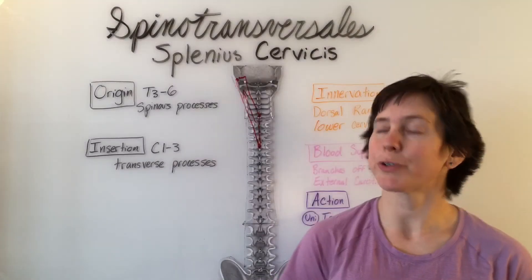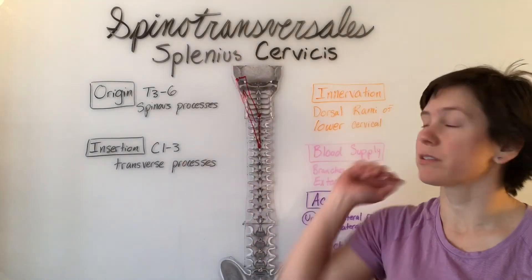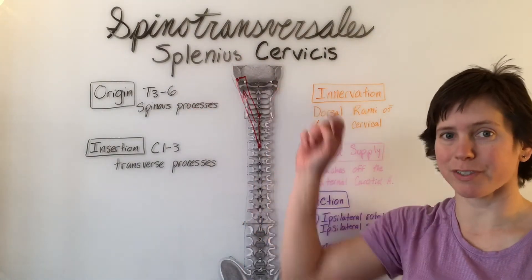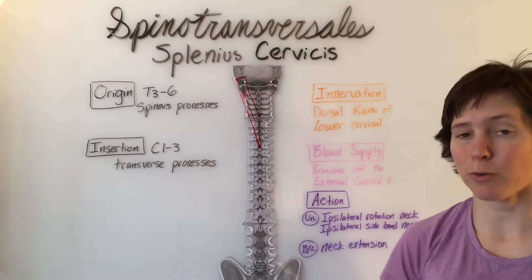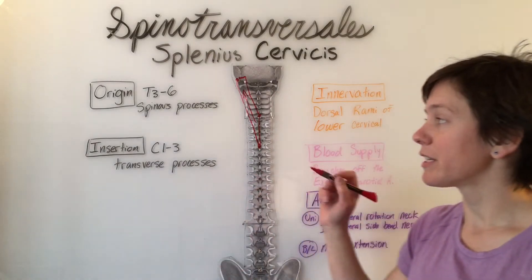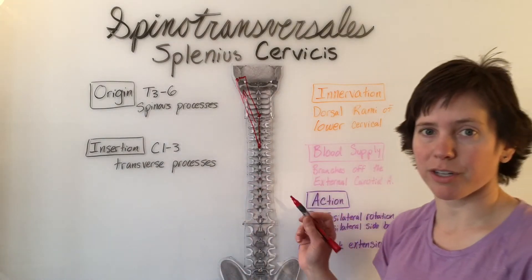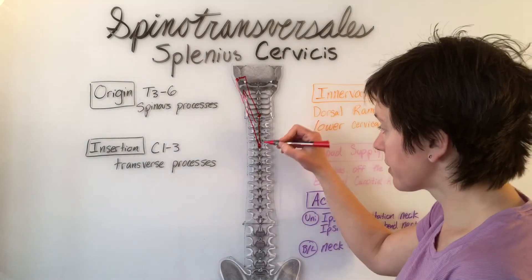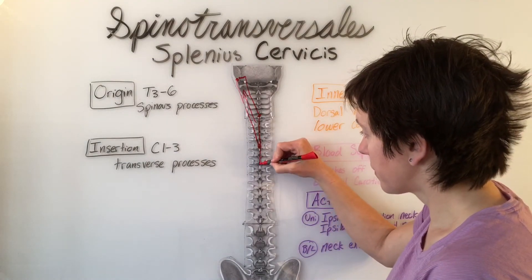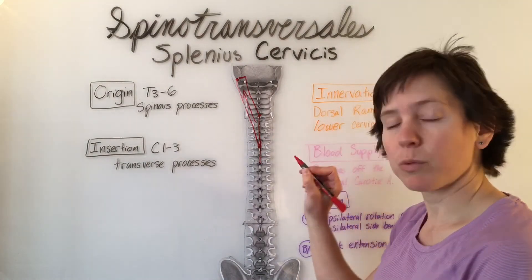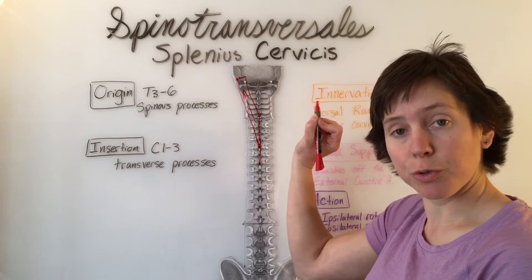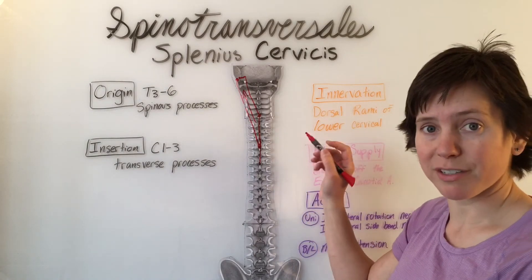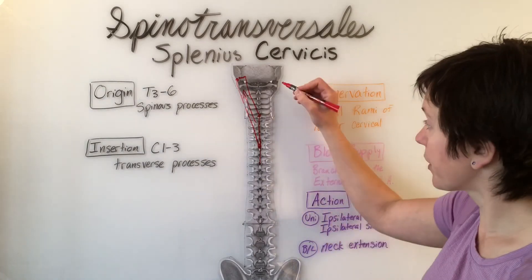The second muscle in the spinotransversalis group is the splenius cervicis. Its origin is the spinous processes of T3 through T6, and it travels superiorly to insert on the transverse processes of C1 through C3.